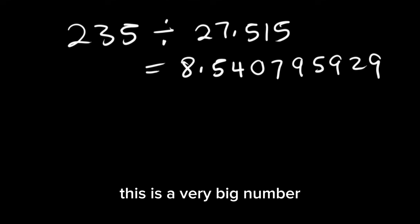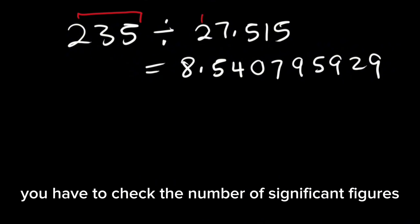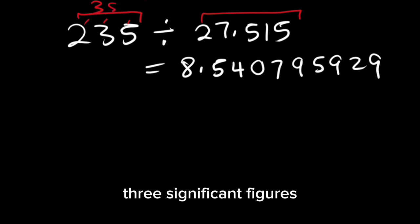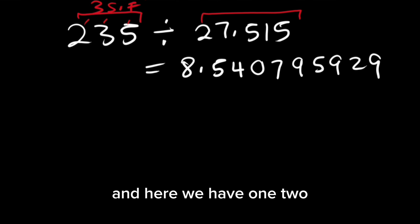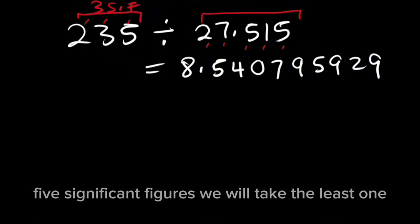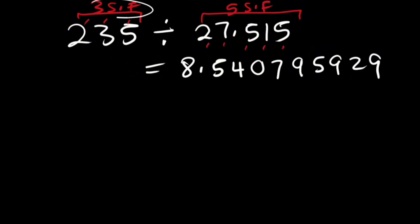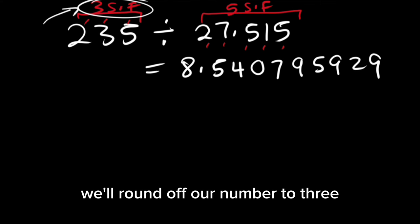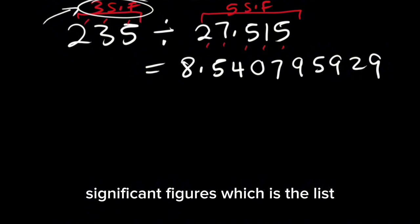This is a very big number, so what do we have to do? We have to check the number of significant figures. Here we have 1, 2, 3 significant figures, and here we have 1, 2, 3, 4, 5 significant figures. We will take the least one, which is 3.